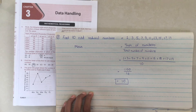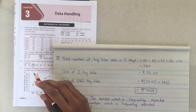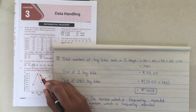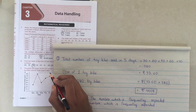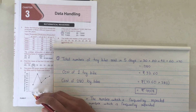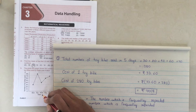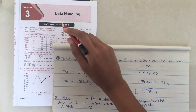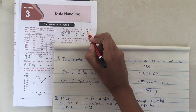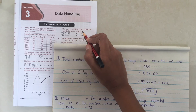Let us move on to the next question. In question 3, the question says: the given line graph shows the number of toy bikes sold by Rob over 5 days. The line graph shows the number of toy bikes sold on Monday, Tuesday, Wednesday, Thursday, and Friday. The question asks: if the cost of one toy bike is 33.60 rupees, then how much did he earn in 5 days?